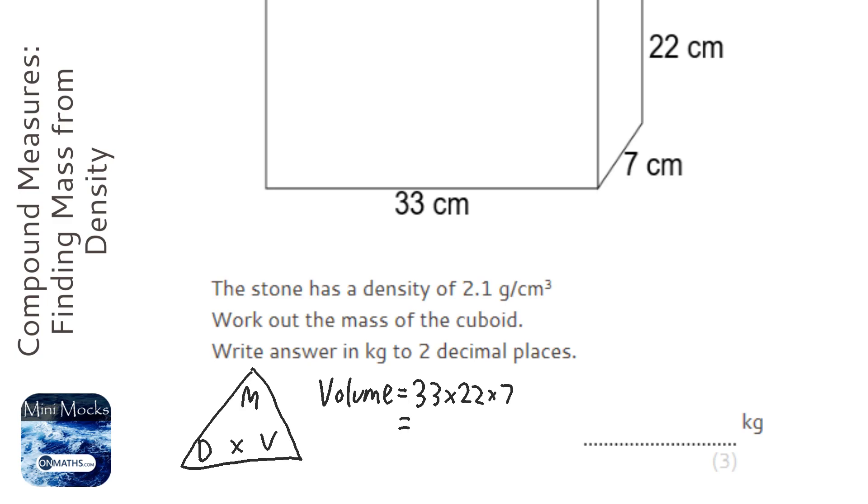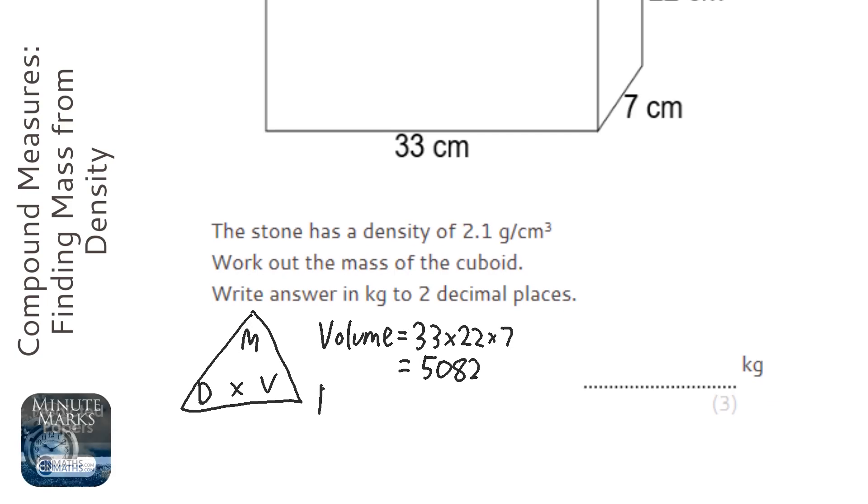So 33 times 22 times 7 on the calculator, and I get 5082. Now to work out the density—